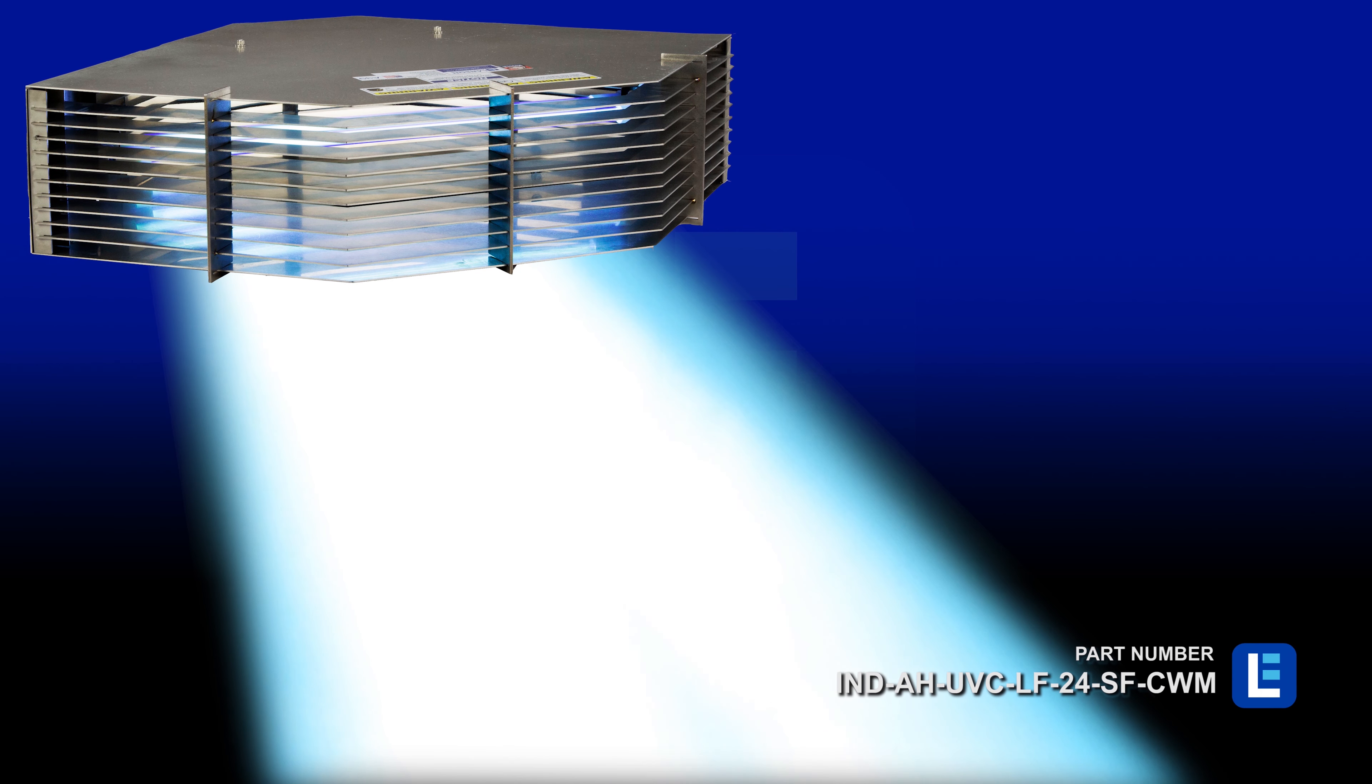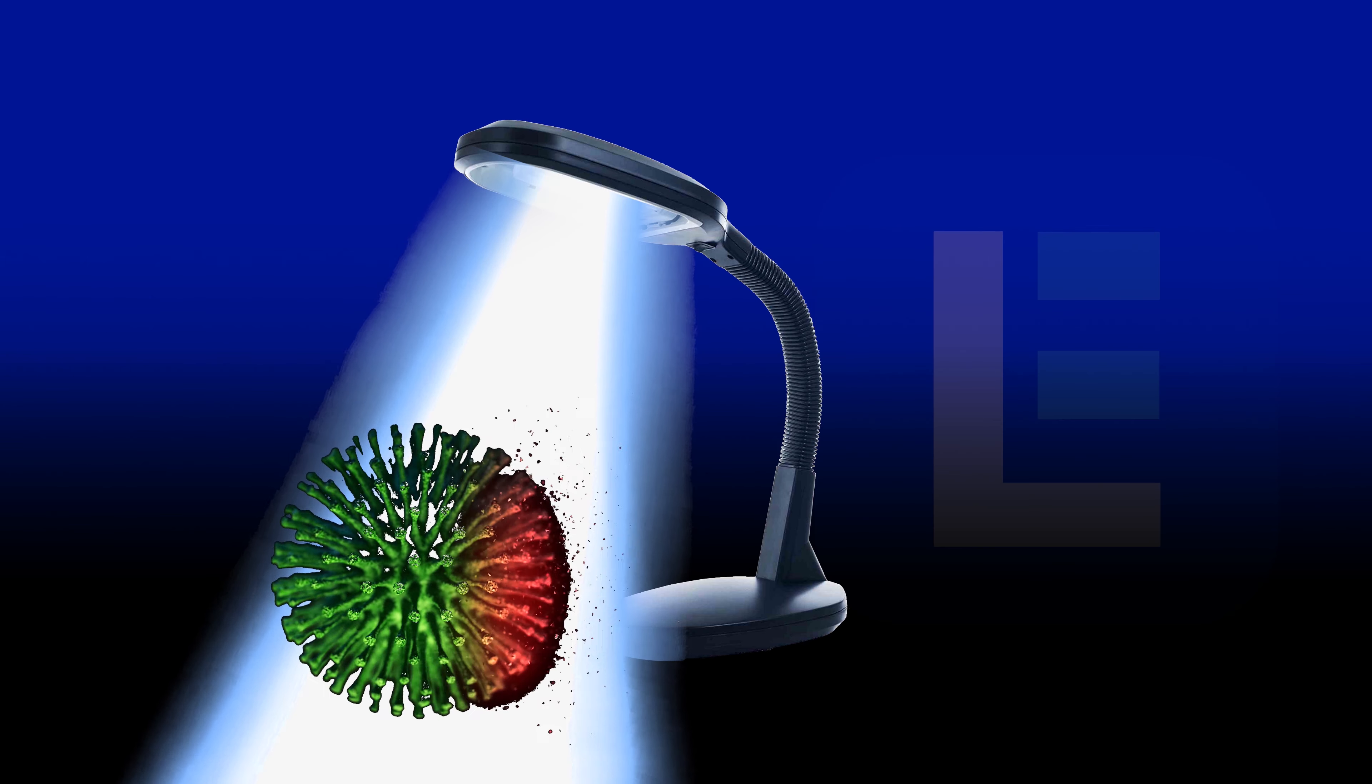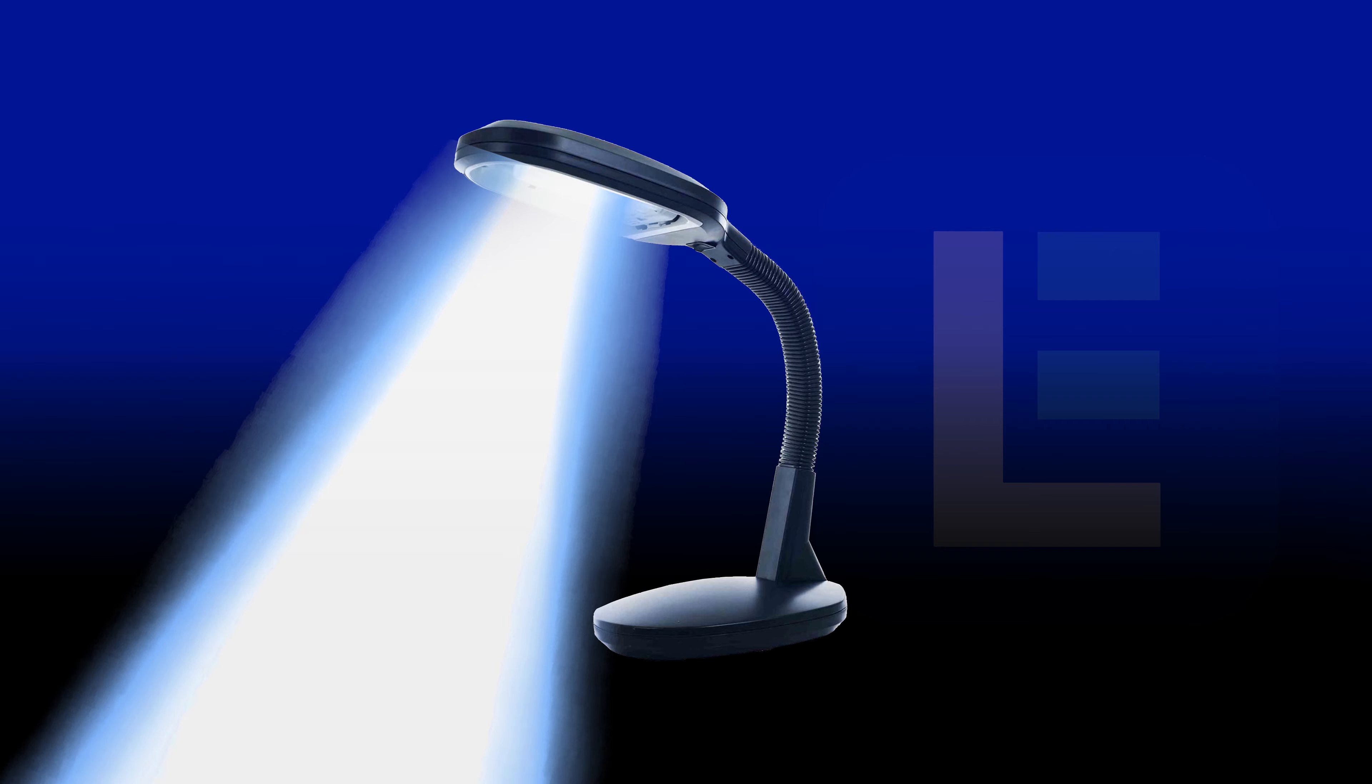Ultraviolet germicidal irradiation can be an effective way to kill bacteria, viruses, mold, and spores and help mitigate the spread of airborne pathogens.